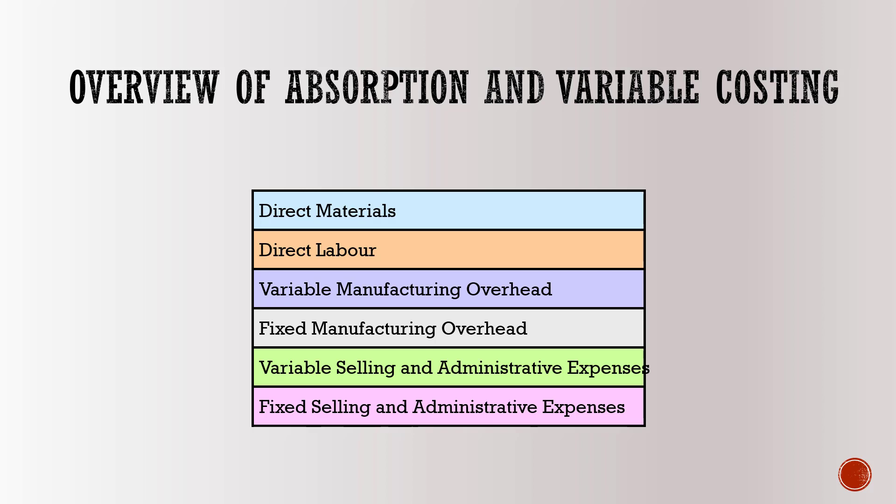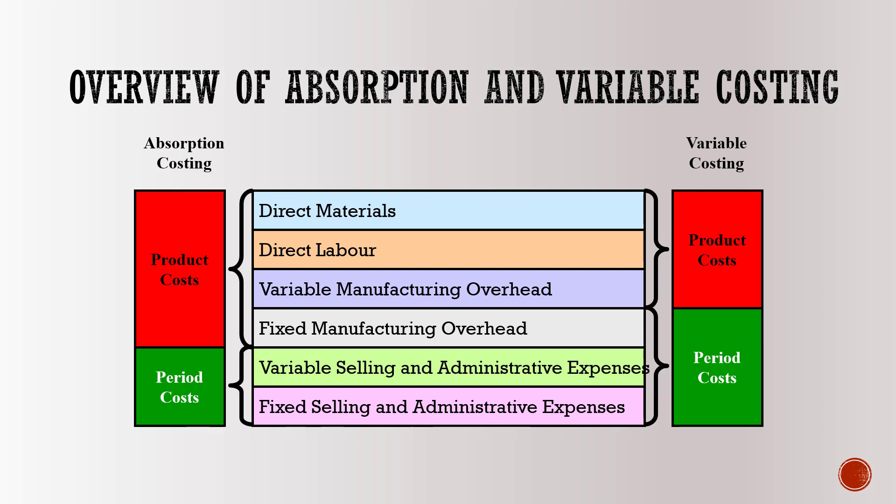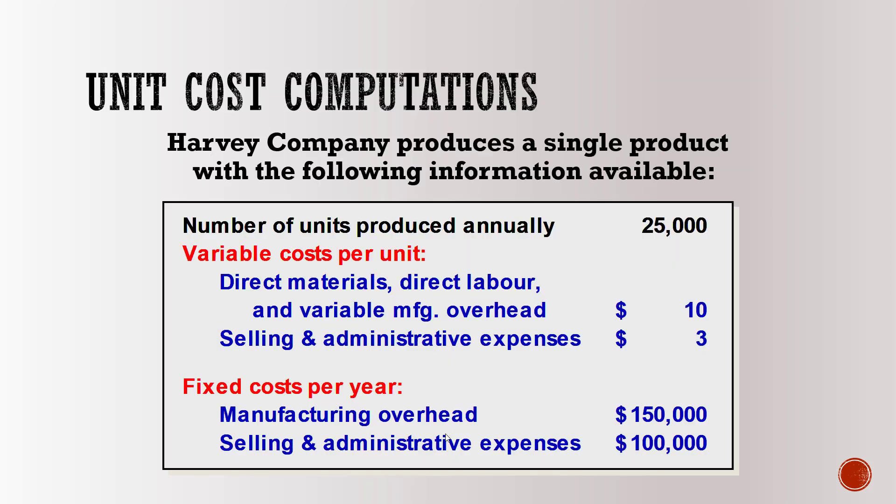The information provided by variable costing is mostly used by internal management for decision-making purposes. Absorption costing provides information used by internal management as well as external parties like creditors, government agencies, and auditors. Under absorption costing, the product cost consists of all variable as well as all fixed manufacturing costs — for example, direct materials, direct labor, and factory overhead. Under variable costing, fixed cost is treated as a period or capacity cost and is therefore not included in the product cost.